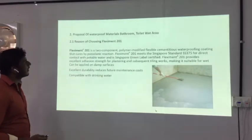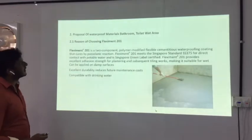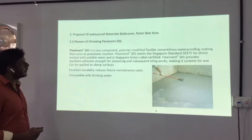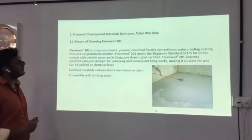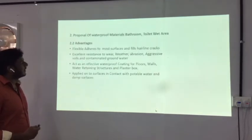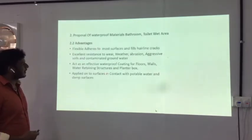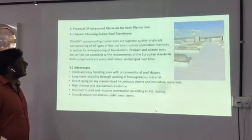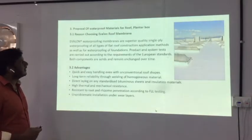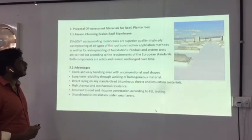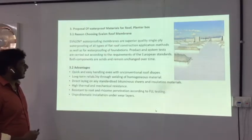Number two is flexible cementitious waterproofing. This material we are going to use for bathrooms, toilets, and external wet areas. These are the advantages for cementitious waterproofing. Number three is for the roof material and the planter box material. This material is evolved roof membrane. These are the advantages.